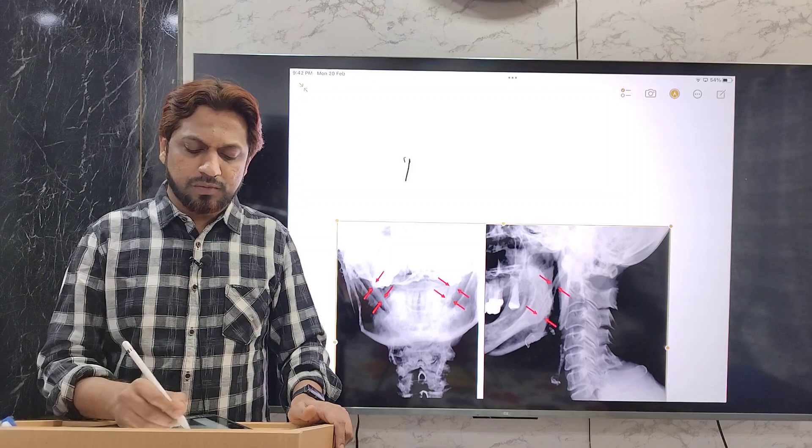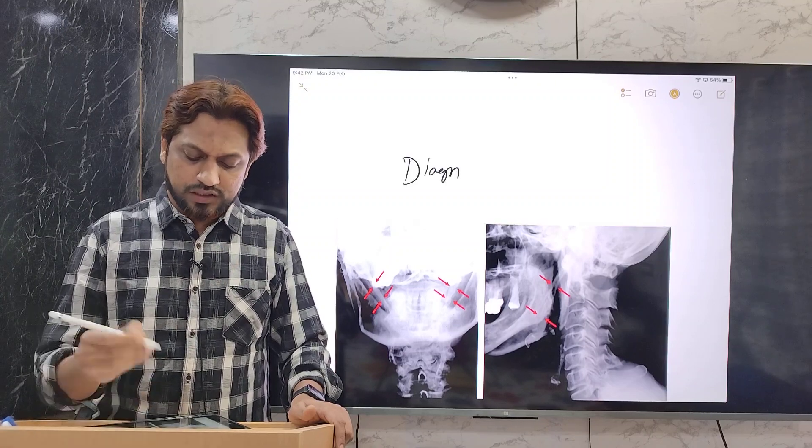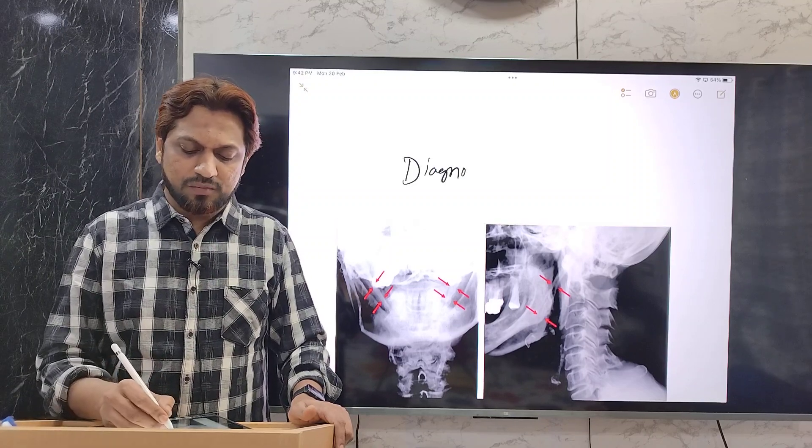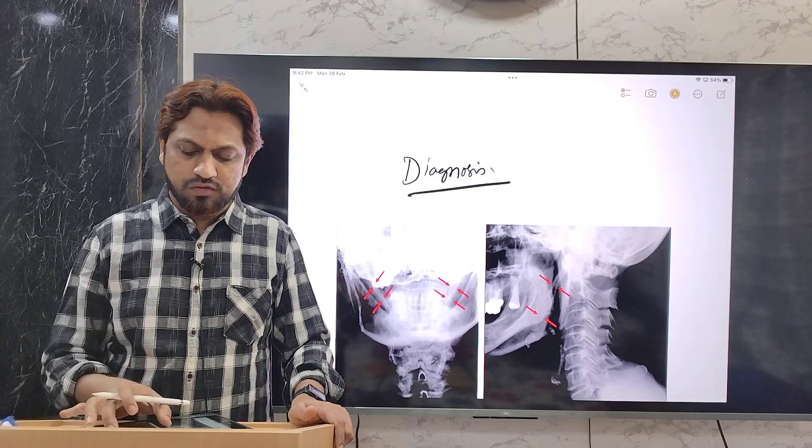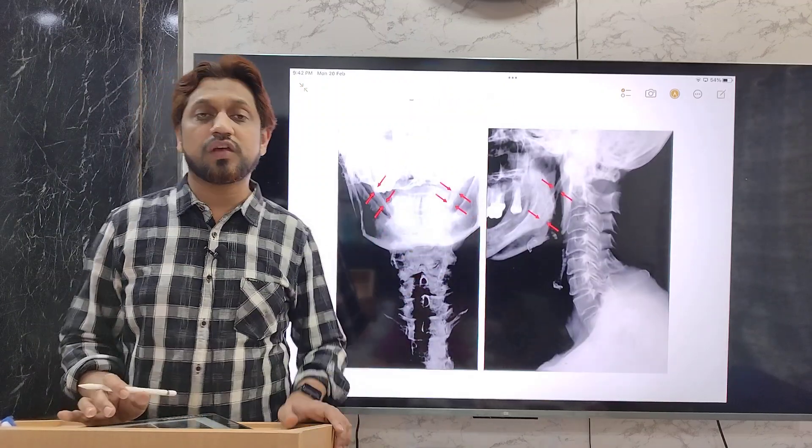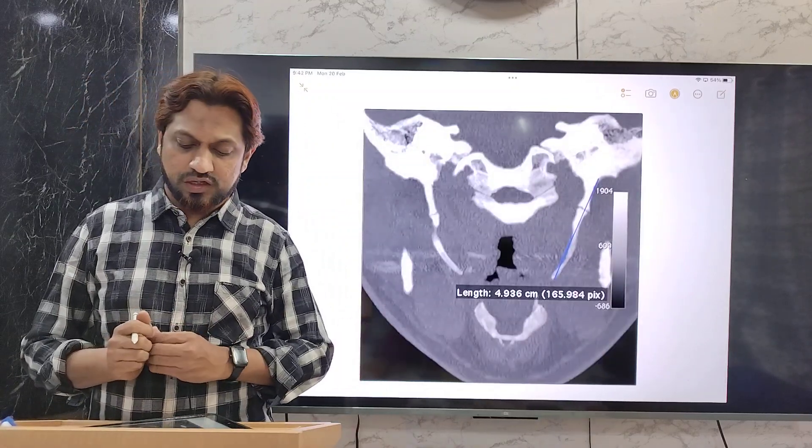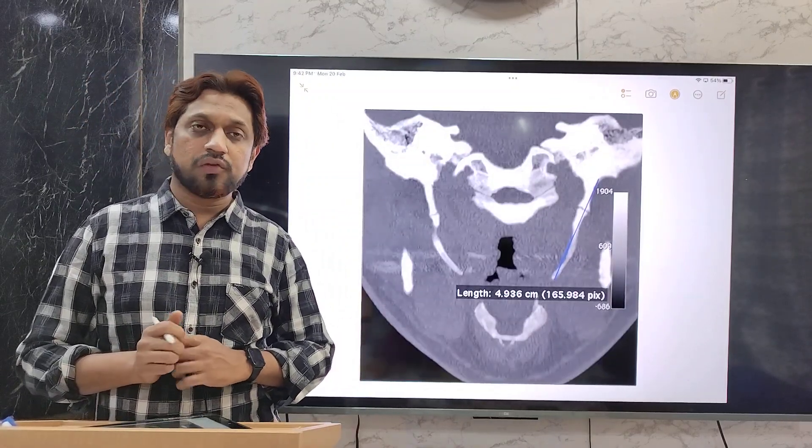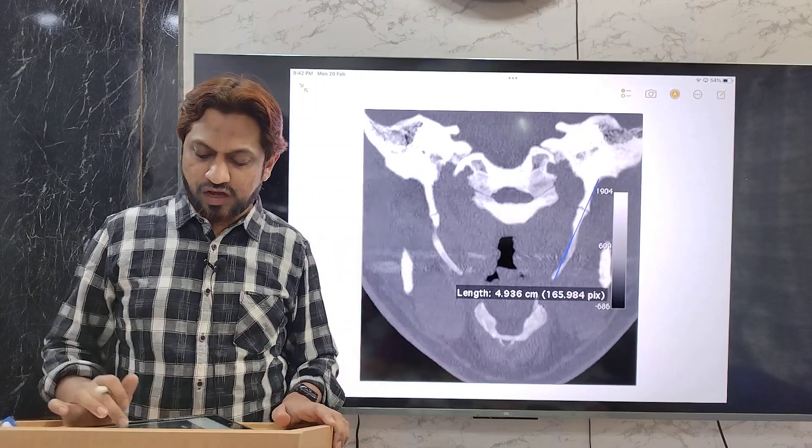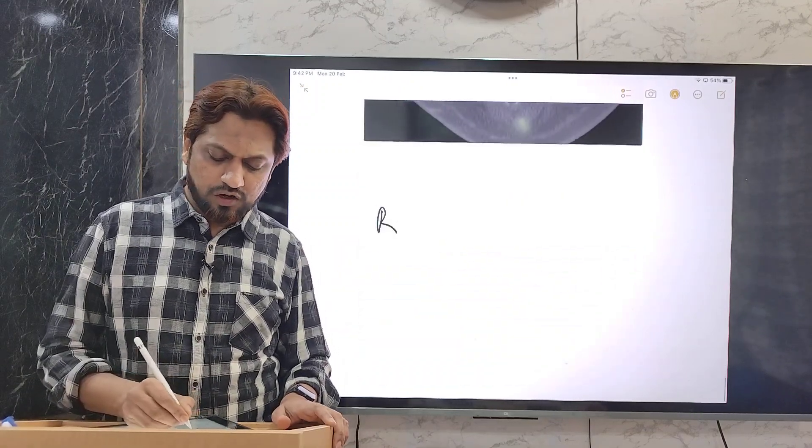Finally, the diagnosis will be done by the radiographic techniques like simple x-ray. Simple x-ray can diagnose the AP view and the lateral view can show the enlarged styloid process. Or if it is not visualized by the simple x-ray, then even the CT scan can be taken which can show the enlargement of this styloid process.